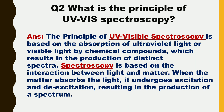Next question is: what is the principle of UV visible spectroscopy? The principle of UV visible spectroscopy is based on the absorption of ultraviolet light or visible light by chemical compounds, which results in the production of distinct spectra. Spectroscopy is based on the interaction between light and matter. When the matter absorbs the light, it undergoes excitation and de-excitation, resulting in the production of a spectrum.